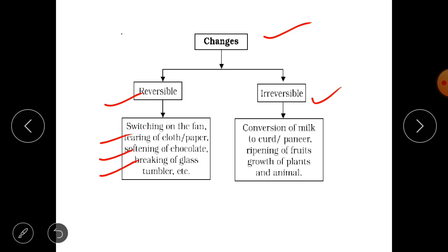Now the second is irreversible change. Let us see the examples. First of all conversion of milk to curd or paneer. So this is an irreversible change, just because we cannot get back the milk. Second, ripening of food. Look whenever the food will ripen or any fruit will ripen, any food will be cooked, so these are irreversible.